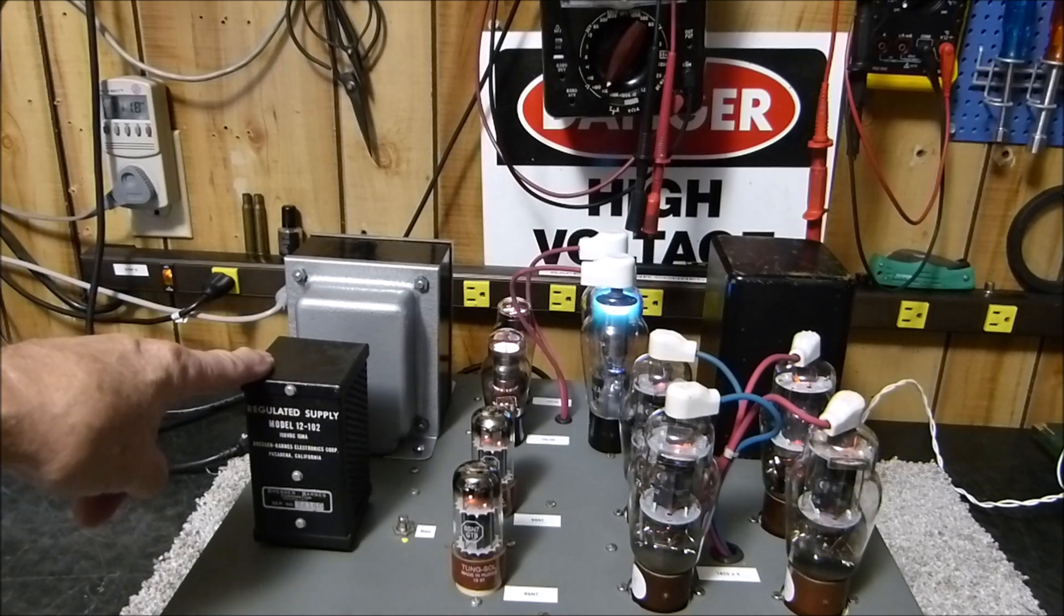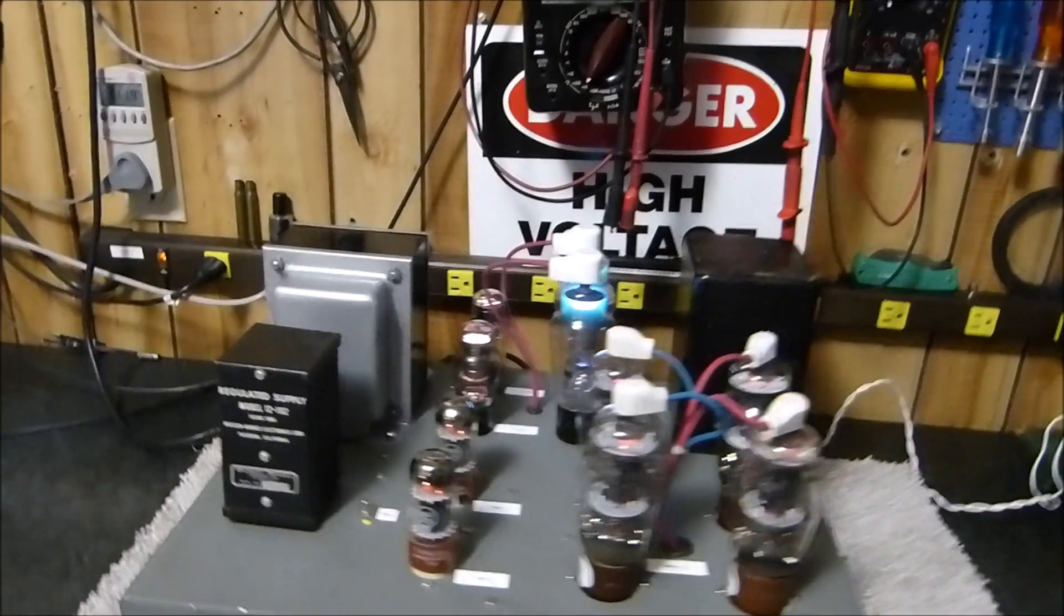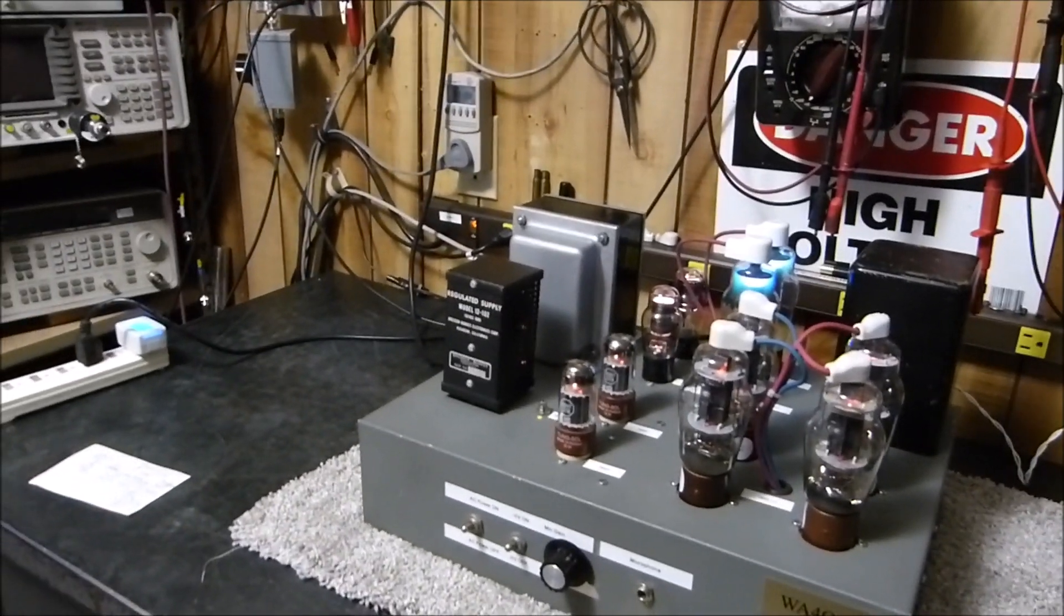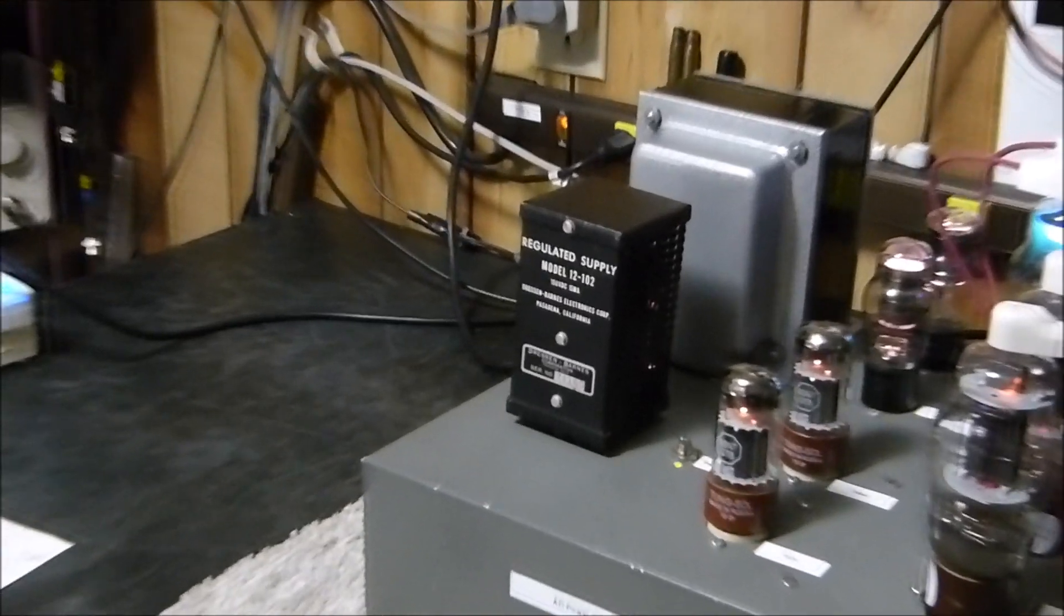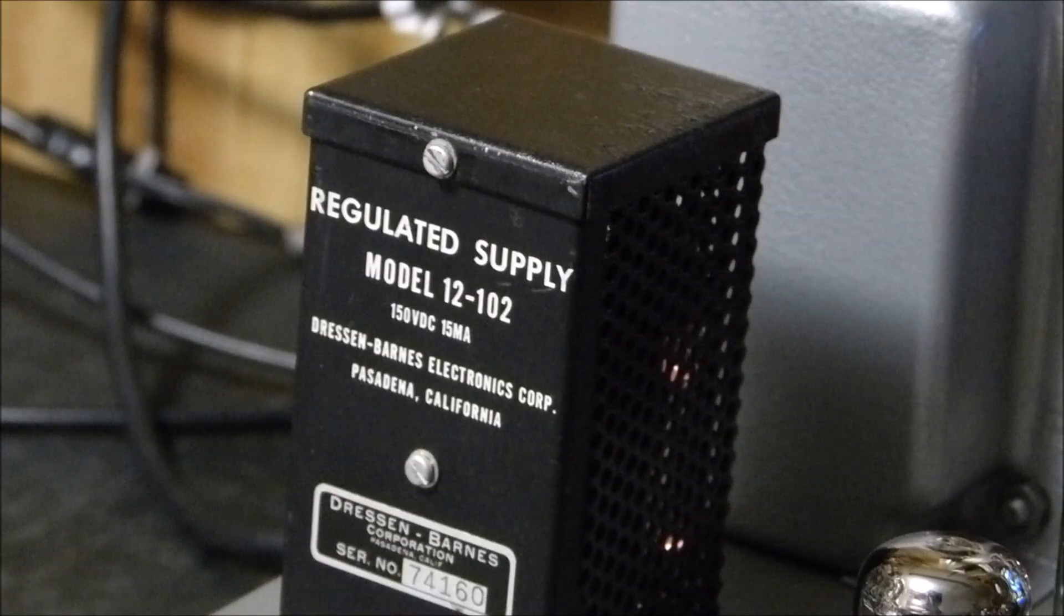I am using this little regulated supply for the bias. If you look right inside there, it's got its own little VR tube. You can see it glowing kind of purple in there, right inside here. That's a little bit of overkill, but what the heck.